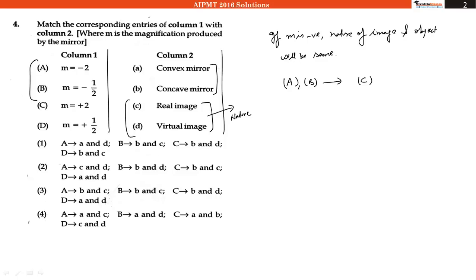So in A and B we have to produce real image and real image can be produced using B. So A should have B and C and this capital B it should also have small b and small c which is only possible in option 3.